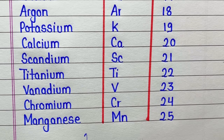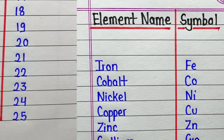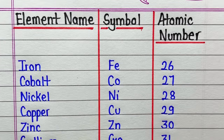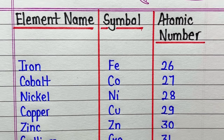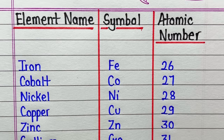Manganese, symbol is Mn, atomic number is 25. Iron, symbol is Fe, atomic number is 26. Cobalt, symbol is Co, atomic number is 27. Nickel, symbol is Ni, atomic number is 28.